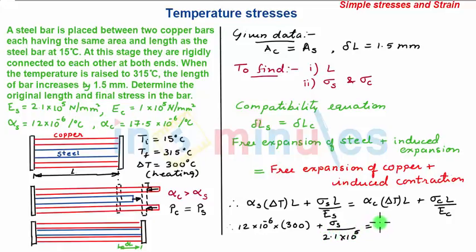This equals 17.5 times 10^-6 multiplied by 300 plus sigma_C upon E_C. E_C is 1 times 10^5. Let this be equation 2.